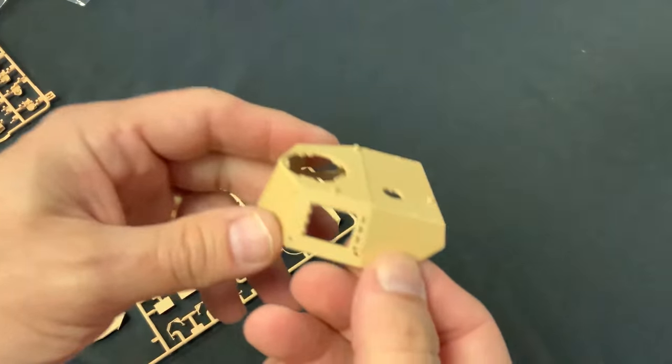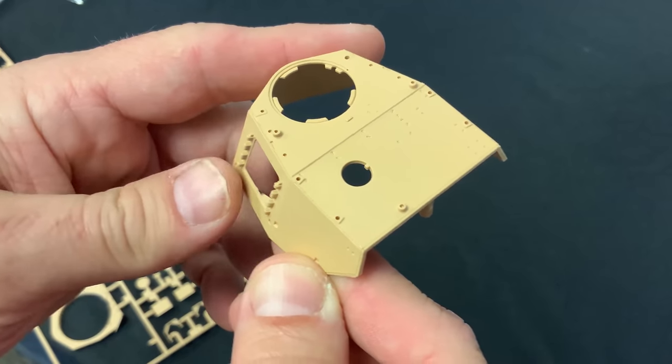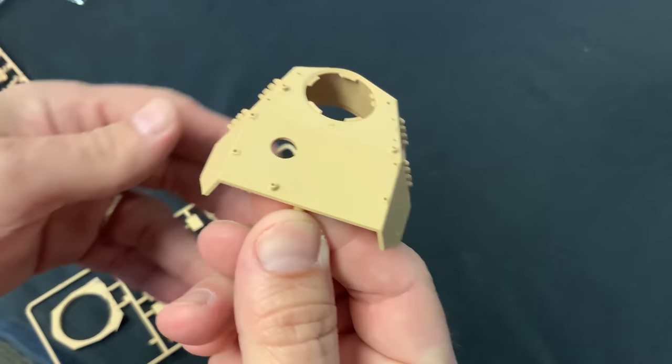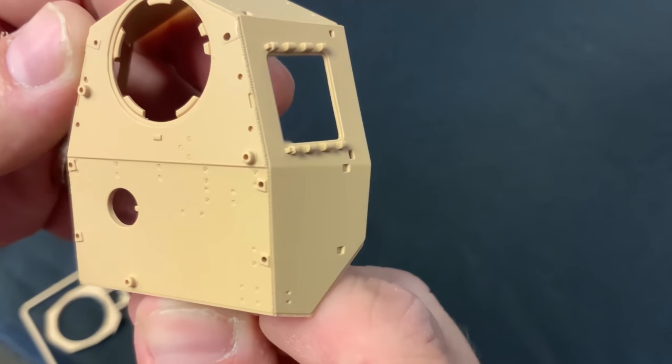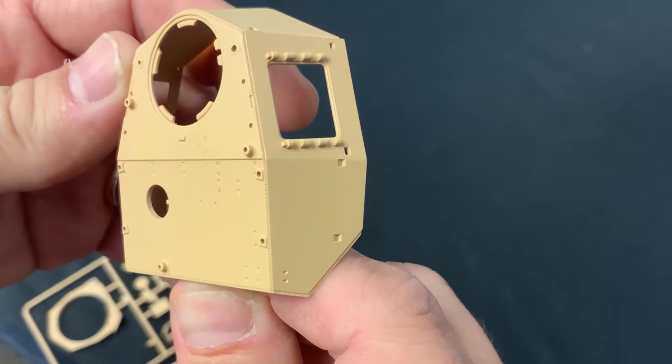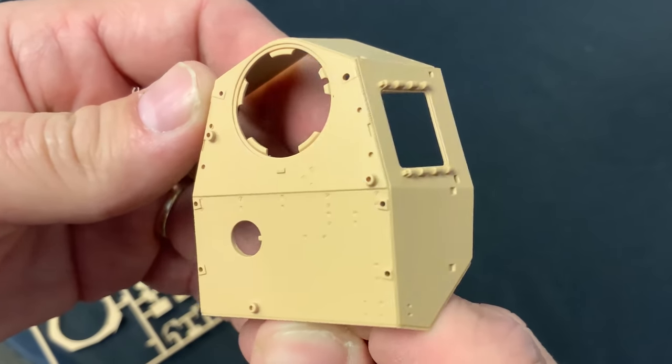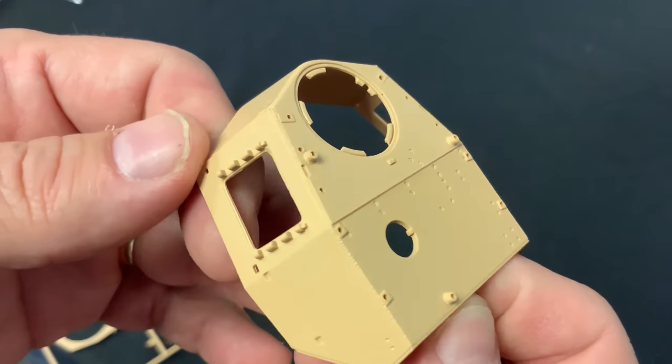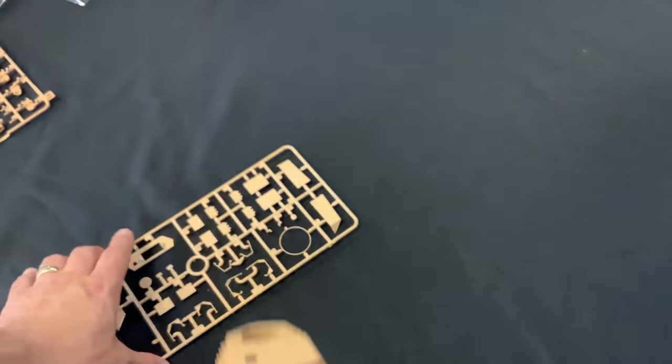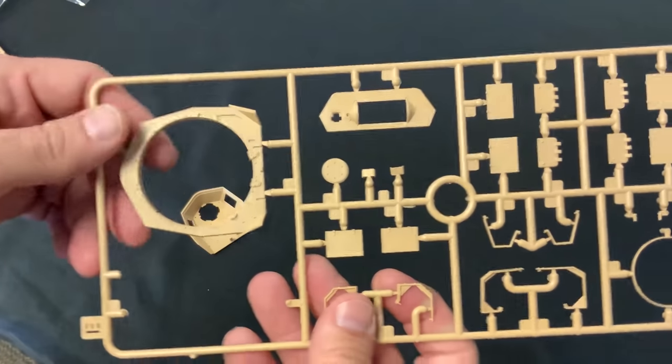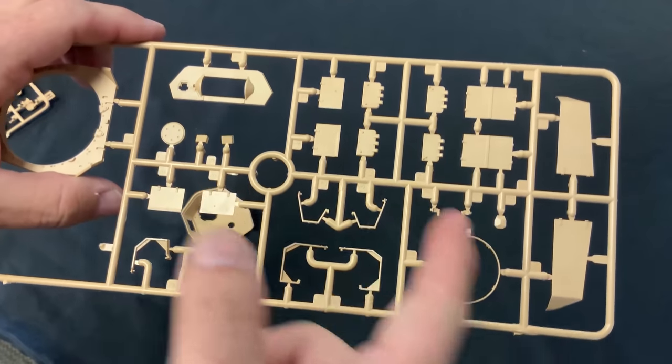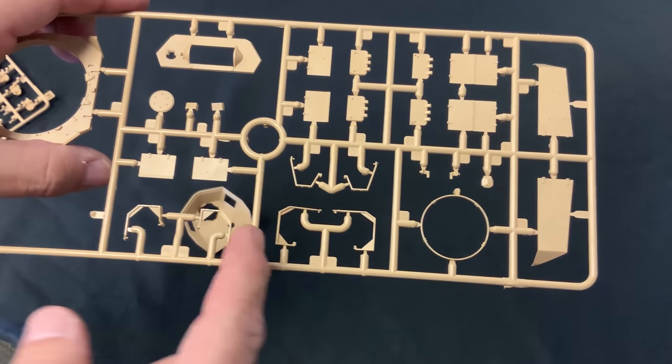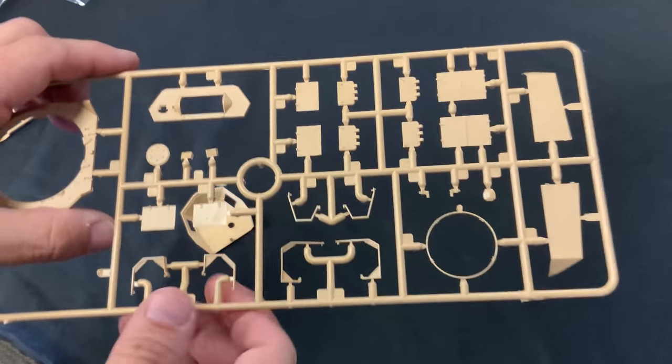Here is the turret. Very nicely done with the weld seams I think. And we have also bottom of the turret doors, more of the shielding up on top and some of the brackets for the skirts.